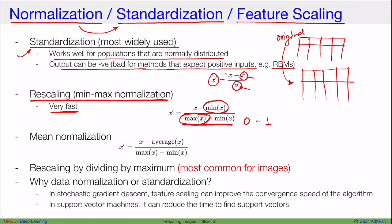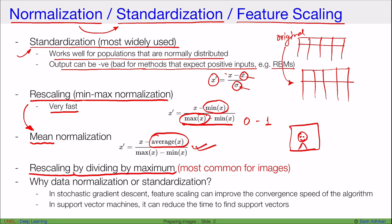Another common technique, a slight variation of min-max normalization, is mean normalization — here instead of subtracting the minimum value we subtract the average. When you have images as input, the most common type of normalization is simply rescaling by dividing by the maximum pixel value. Since images are made of number values at each pixel, we take the maximum value of all pixels and divide everything by it, giving you a normalized image with all values less than or equal to one.